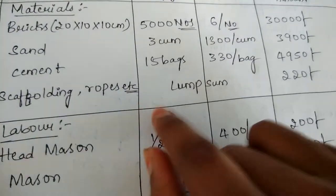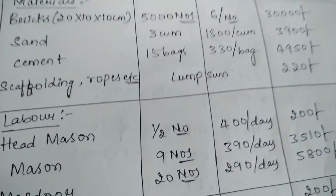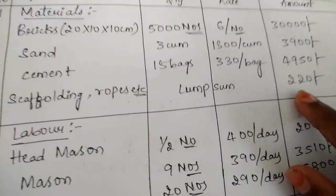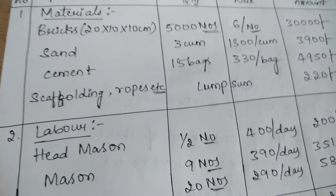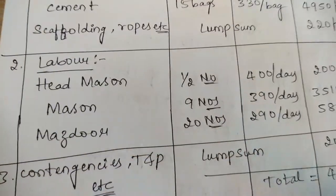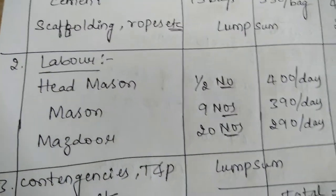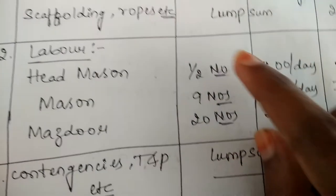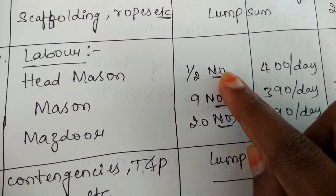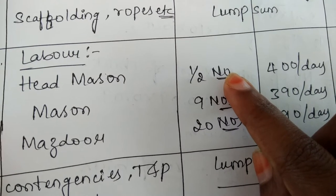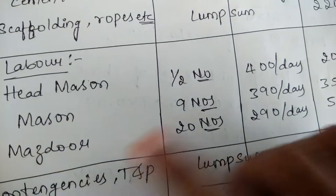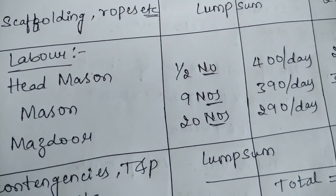For the scaffolding and ropes, we assume a lump sum charge of 220 rupees. That gives you the material amount. Coming to the labor amount, the types of labor required are head mason, mason, and mazdoor. Half number of head mason is required, meaning only half a day, totally 9 numbers of mason will be required, and 20 numbers of mazdoor are required.